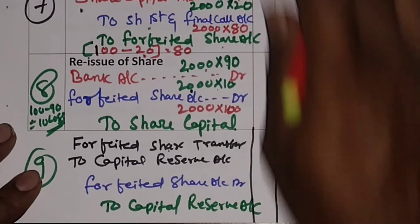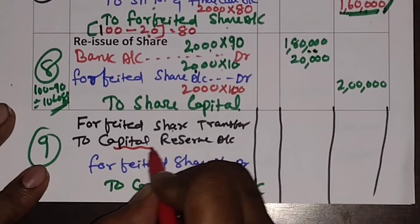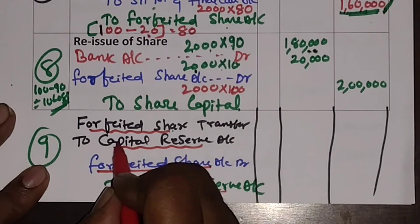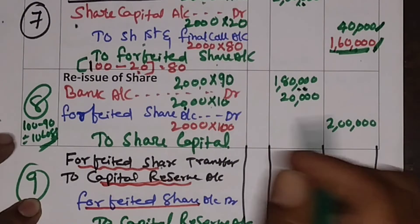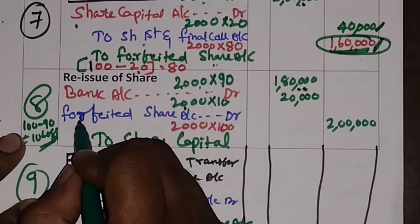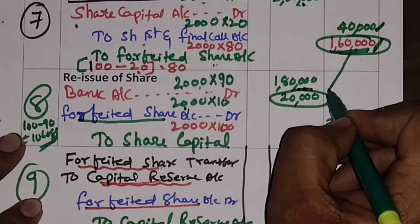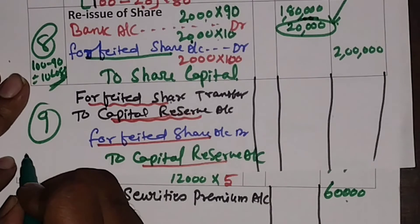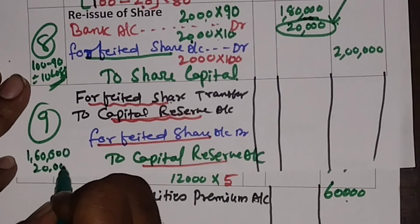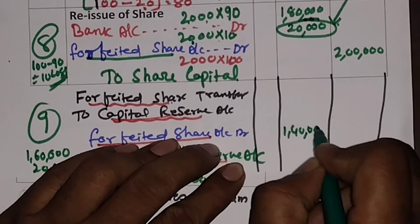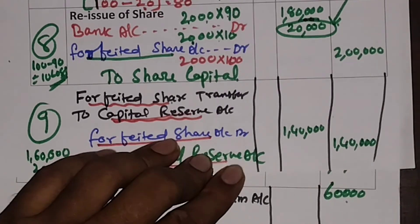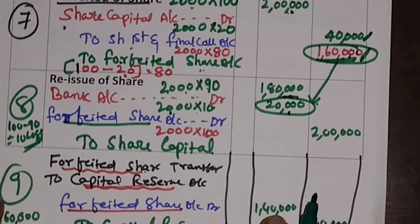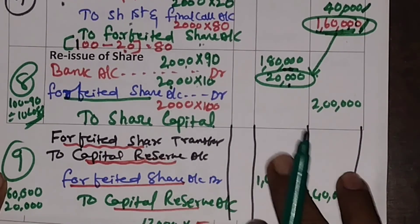The last journal entry: the forfeited share balance has to be transferred to capital reserve. Forfeited Share Account is debited and Capital Reserve Account is credited. The calculation: forfeited share collected was Rs. 1,60,000, minus the loss on reissue of Rs. 20,000, gives Rs. 1,40,000. This means the company gained a net benefit of Rs. 1,40,000 after cancellation and reissue of the shares. This amount is transferred to capital reserve.